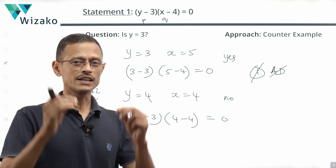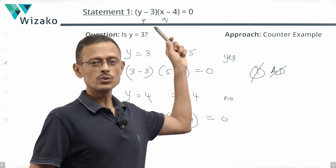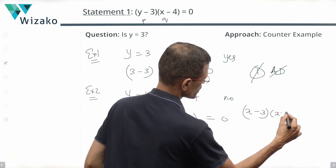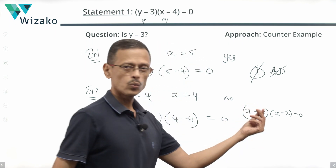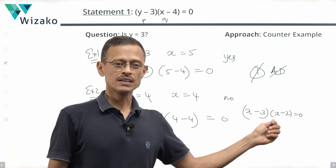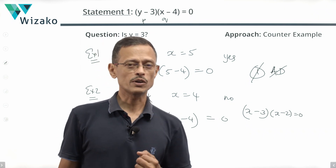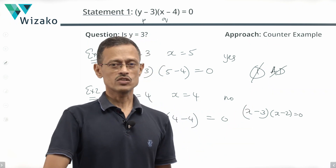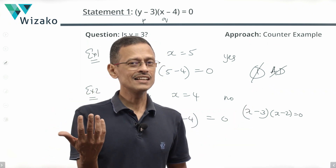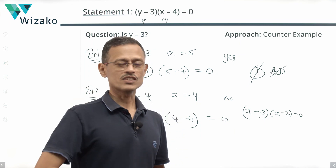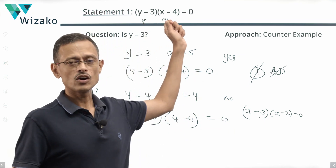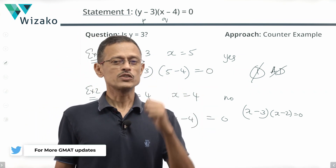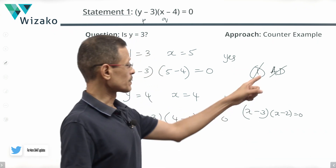The key takeaway: don't take it for granted that one specific factor must be zero. For example, if (x − 3)(x − 2) = 0, it means x could be 3 or x could be 2 — either makes the product zero. So when we solve this equation, x can take the value 3 or 2; both possibilities exist. Similarly here, y could be 3 or x could be 4. In either case the product is zero. So is y equal to 3? We are not sure. Statement 1 alone is not sufficient.